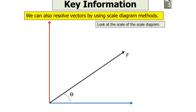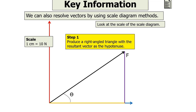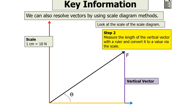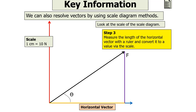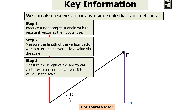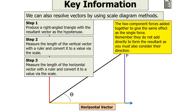We can also resolve vectors using scale diagram methods. If we set a scale of, say, 1 centimetre equals 10 newtons, we can produce a right-angled triangle with the resultant vector as the hypotenuse. We then measure the length of the vertical vector with a ruler and convert it to a value via the scale, and similarly measure the horizontal vector. Following these steps allows you to work out the horizontal and vertical components. The two component forces add together to give the same effect as a single force, but we do not add horizontal and vertical vectors directly — we must consider their direction.